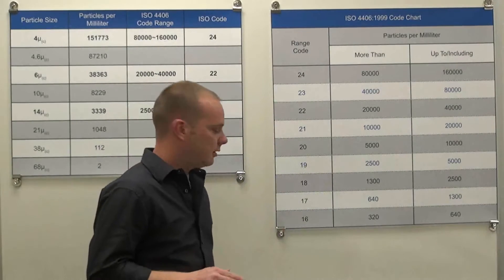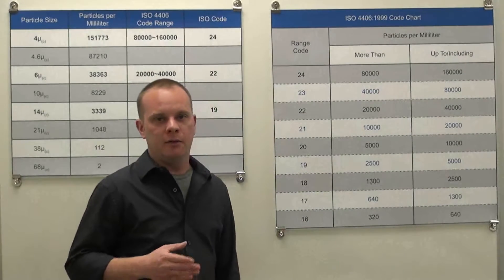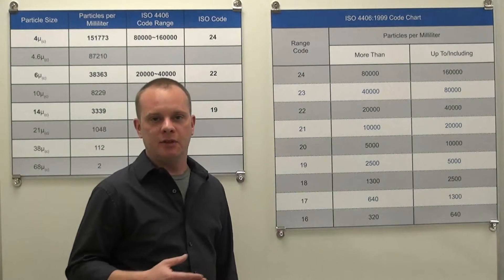Each contamination code contains all particles of the specified micron size and larger. Now, it's important to note that as an ISO code increases by one, the range of contamination found in the fluid is going to double.